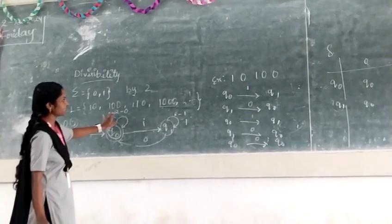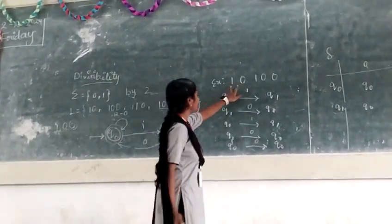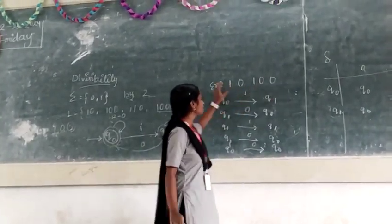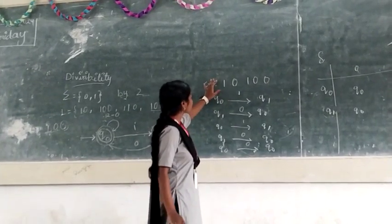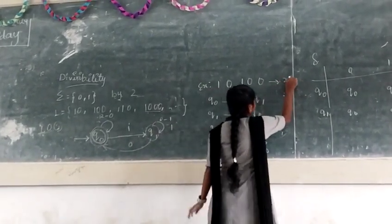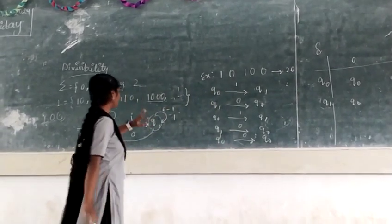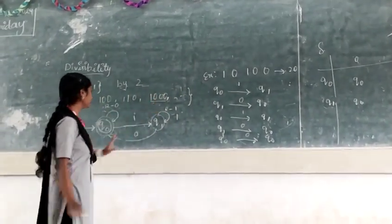Let's take an example, one zero one zero zero. It is the binary representation of 20. Let's check our DFA, accept this as an example.